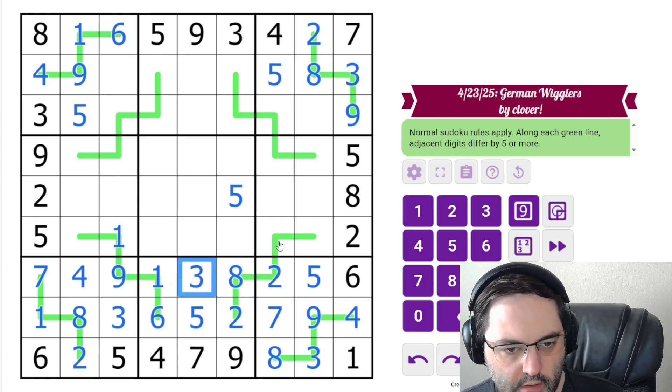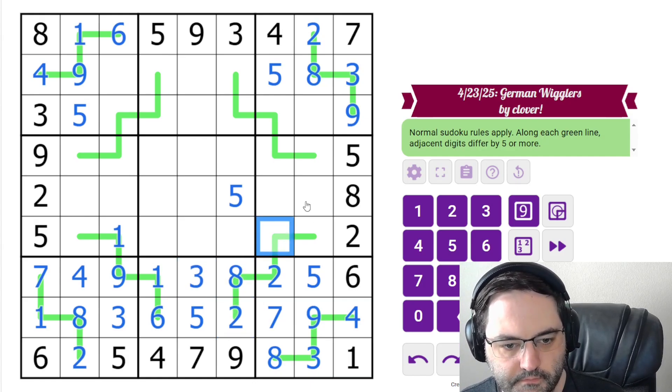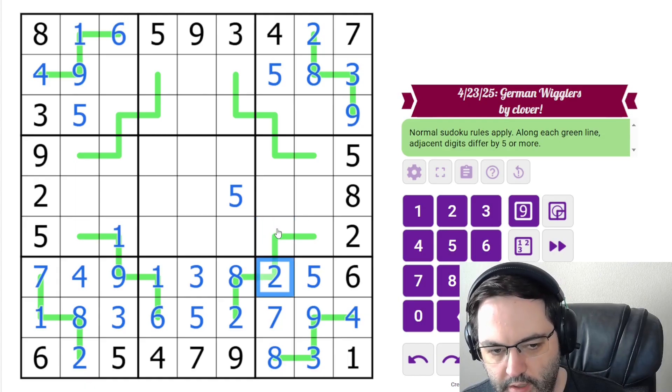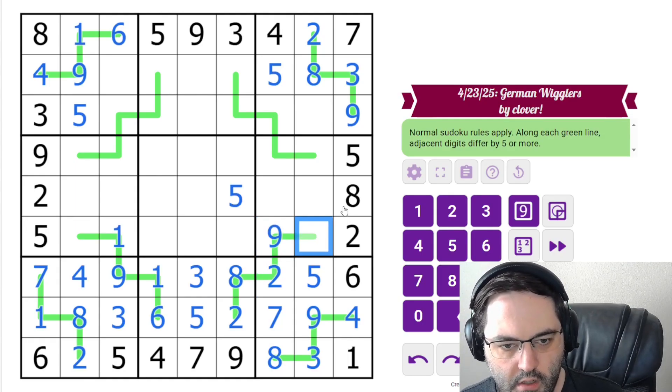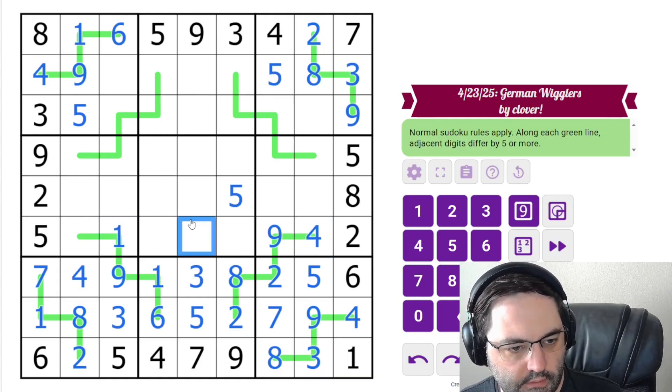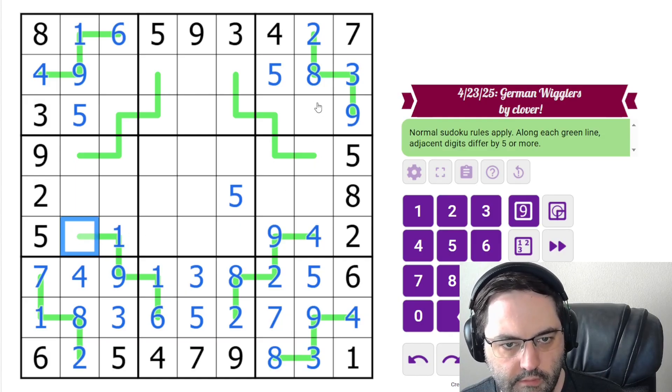So this must be a 2 again. This can't be 3 going next to 2. This is 6 or 9, but 6 can't go next to 2. And then this is 4 because it sees all the other digits. This is still not resolved, 6 or 7.